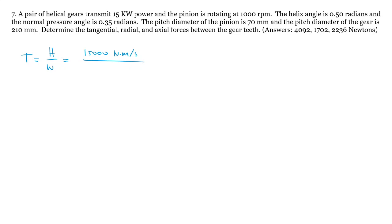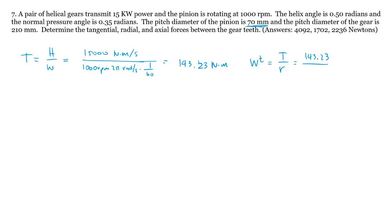I not only have to multiply the RPM times 2π radians per revolution but also convert minutes into seconds. When I do that I get 143.23 Newton-meters of torque. The tangential force is equal to the torque over the radius, so 143.23 divided by the radius of the pinion which is 35 millimeters, giving approximately 492 Newtons.